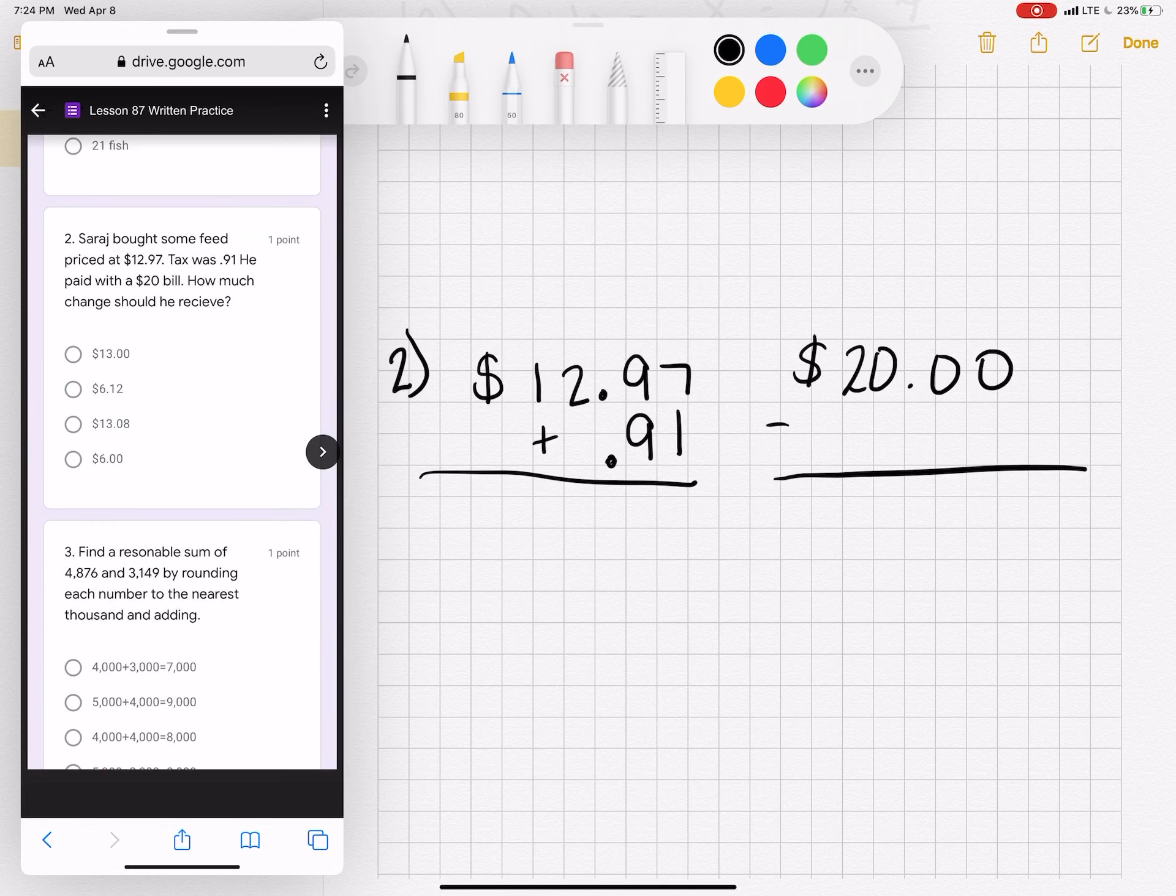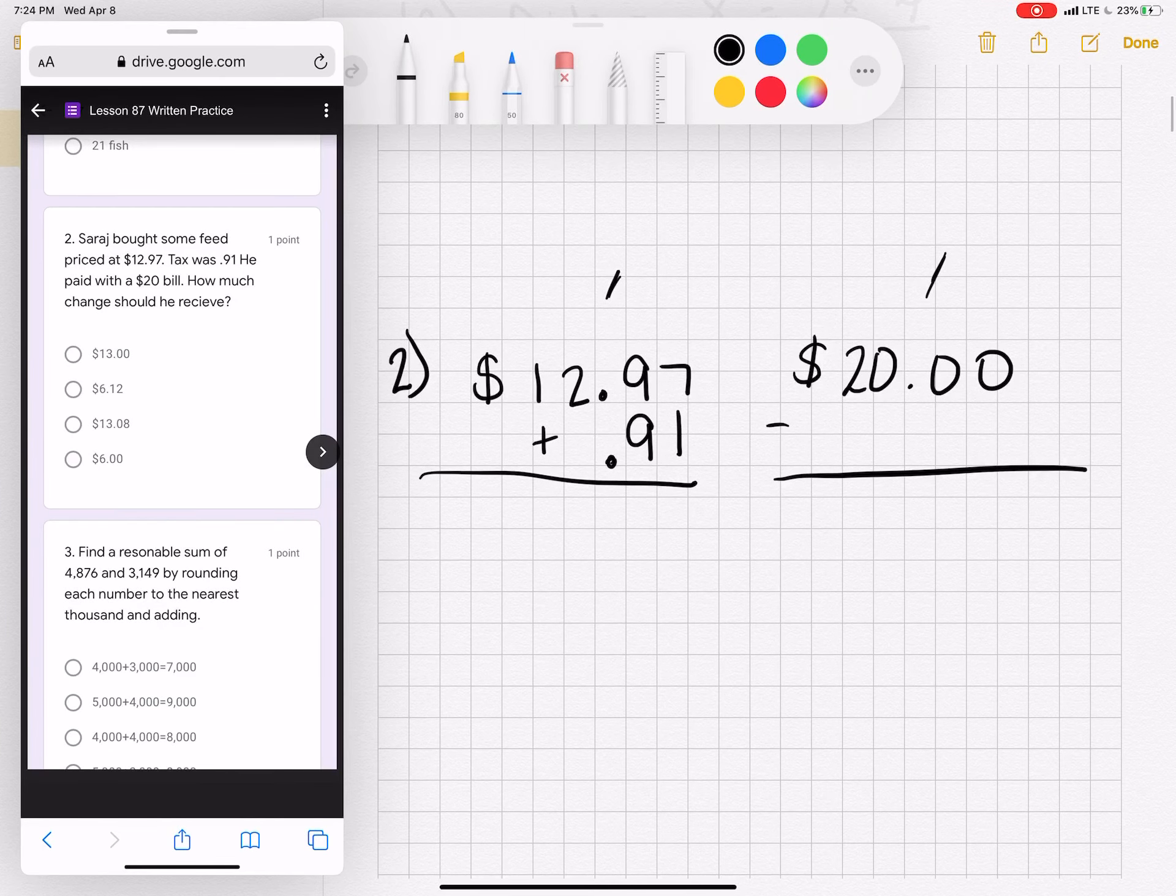Suraj bought some feed, priced at $12.97. Tax was $0.91. He paid with a $20 bill. How much change should he receive? So this is two steps. Add and then subtract to find the amount of change he will receive. So adding your tax to your total, 7 plus 1 is 8, 9 and 9, 18. Bring down your decimal, carry a 1. 2 plus 1 is 3. 1 plus nothing is 1. So I have $13.88.